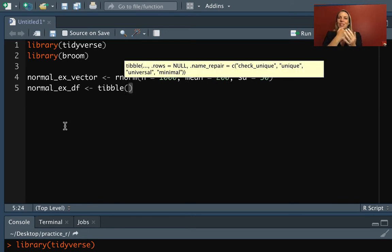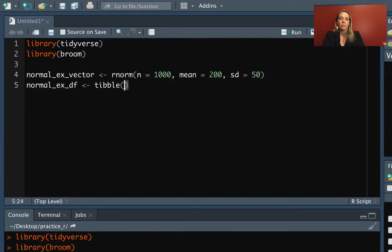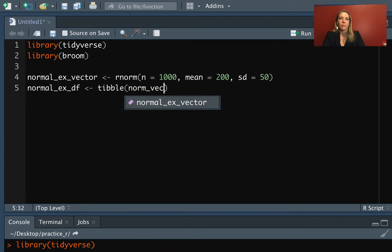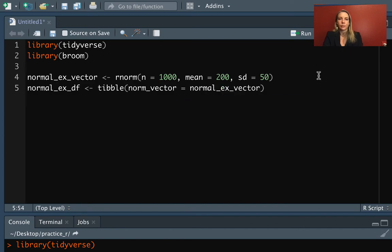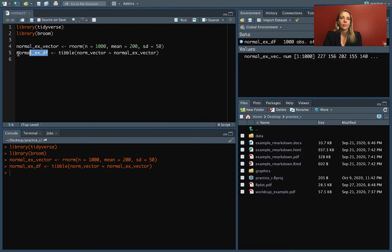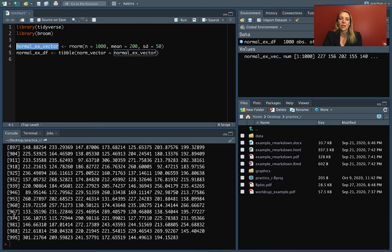In this case, we're just going to have one column called norm_vector, and we can define that as this vector we just created. When we look at it now, you'll see that we've got a tibble with just one column in that tibble format, in comparison to the original vector that we had where it's all in that long string of values.